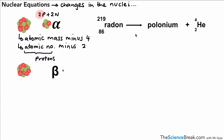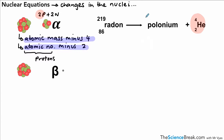Let's look at what this looks like in a nuclear equation. We've got radon decaying into polonium and an alpha particle. Radon has an atomic mass of 219 and an atomic number of 86. We lose our alpha particle, so for polonium: atomic mass is 219 minus 4, which gives 215, and atomic number is 86 minus 2, which gives 84. So polonium has atomic mass 215 and atomic number 84.